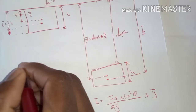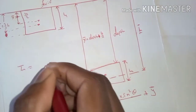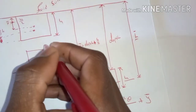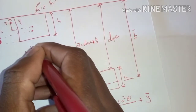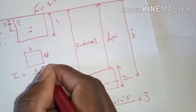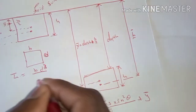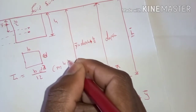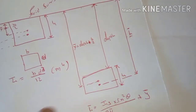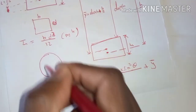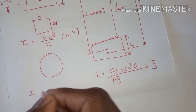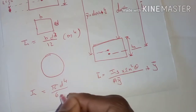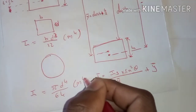The moment of inertia for a rectangle, where the dimensions are B and D, is given by B·D cubed divided by 12, with SI units of m to the power 4. The moment of inertia for a circle is given by π·D raised to the power 4, divided by 64, with the same SI unit of m to the power 4.